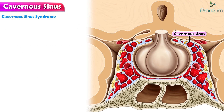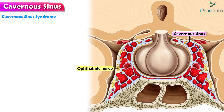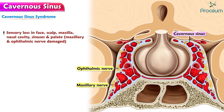Cavernous sinus syndrome can lead to Horner syndrome. Horner syndrome occurs when the sympathetic plexus around the internal carotid is damaged. When the ophthalmic nerve and the maxillary division of the trigeminal nerve are involved, the clinical manifestations are in the form of sensory loss in the face, scalp, maxilla, nasal cavity, sinuses, and palate.